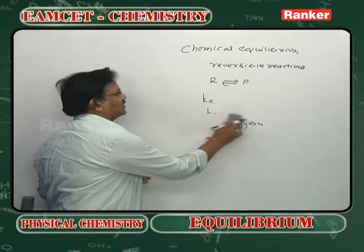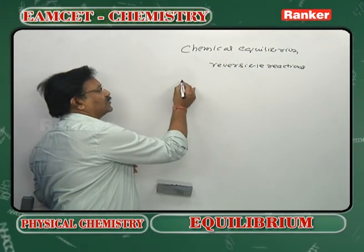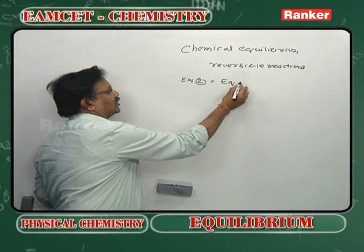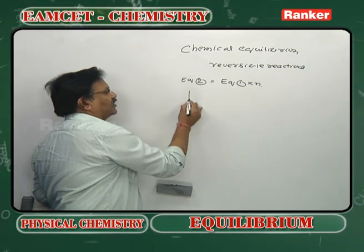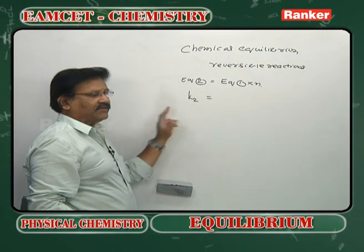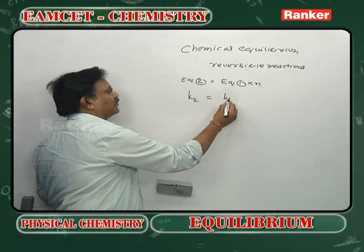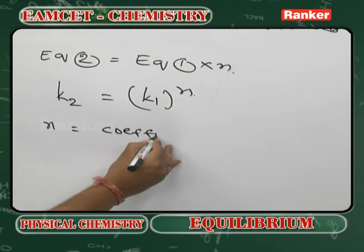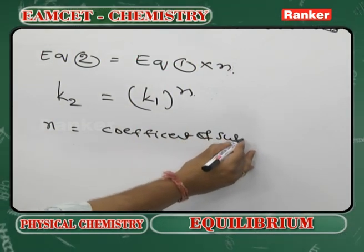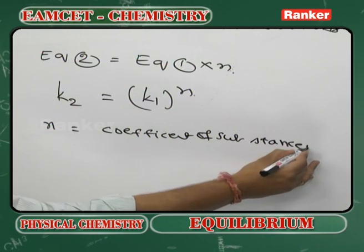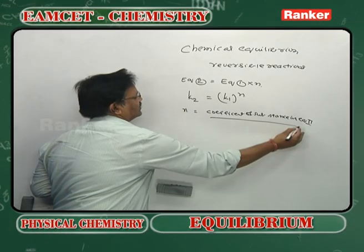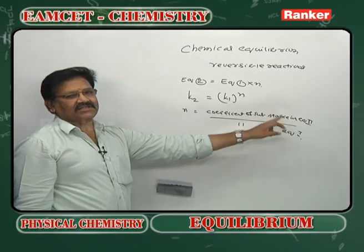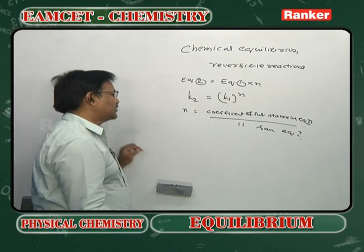Regarding changes in the values of Kc and Kp with change in stoichiometry: if a new equilibrium 2 equals equilibrium 1 multiplied by N, then K2 = K1^N. Here, N equals the coefficient of a substance in equation 2 divided by the coefficient of the same substance in equation 1. N takes negative values if the substance under consideration is on opposite sides in the two equations.